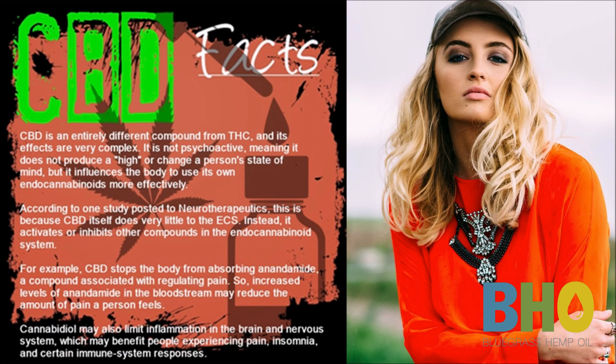According to a 1976 study published by the International Association of Plant Taxonomy, both hemp varieties and marijuana varieties are of the same genus, cannabis, and the same species, cannabis sativa. Further, there are countless varieties that fall into further classifications within the species cannabis sativa.